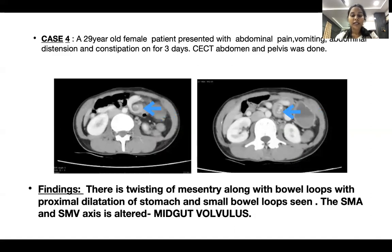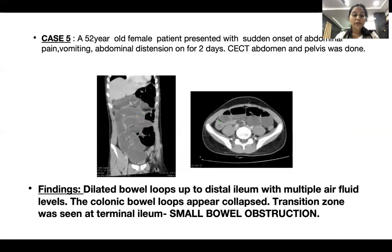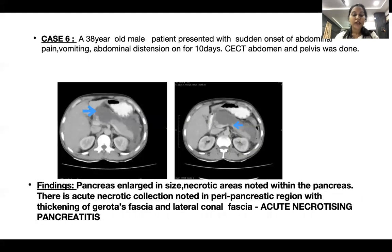Case 4: twisting of the mesentery along with bowel loops with proximal dilatation of the stomach and small bowel loops; the superior mesenteric vein axis is altered — a case of mid-gut volvulus. Case 5: dilated bowel loops up to the distal ileum with multiple air-fluid levels; colonic bowel loops appear collapsed; transition zone seen in the terminal ileum — a case of small bowel obstruction. Case 6: the pancreas is enlarged in size with necrotic areas noted within it; necrotic collection in the peripancreatic region with thickening of Gerota's fascia and lateral conal fascia — a case of acute necrotizing pancreatitis.